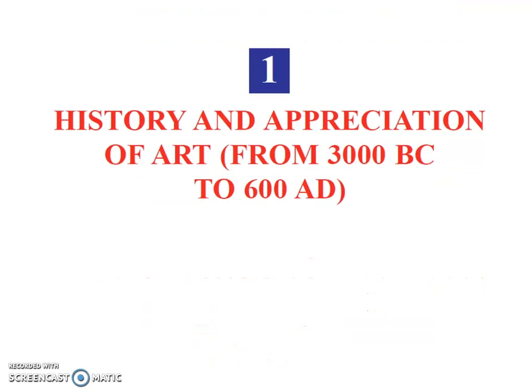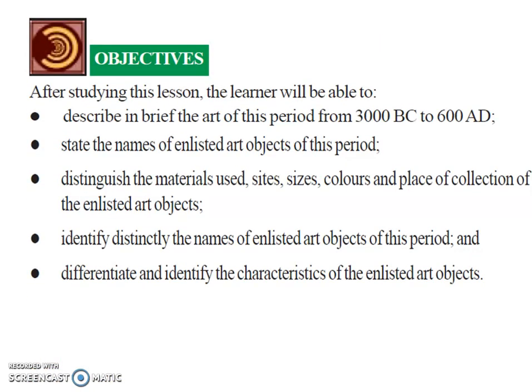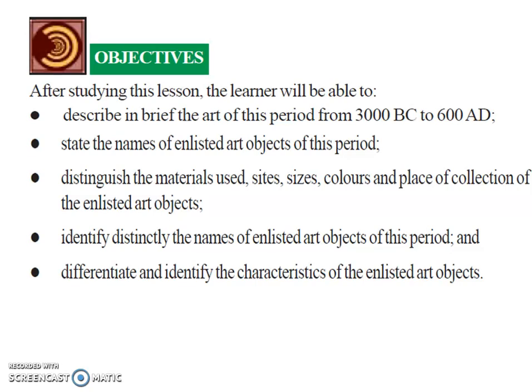History and appreciation of art from 3000 BC to 600 AD. After studying this lesson, the learner will be able to describe in brief the art of this period from 3000 BC to 600 AD, state the names of enlisted art objects of this period, distinguish the material, size, color and place of collection of the enlisted art object, and identify and differentiate the characteristics of the enlisted art objects.